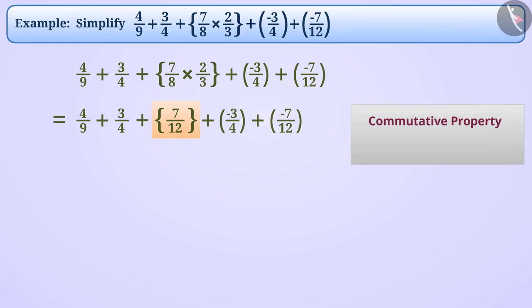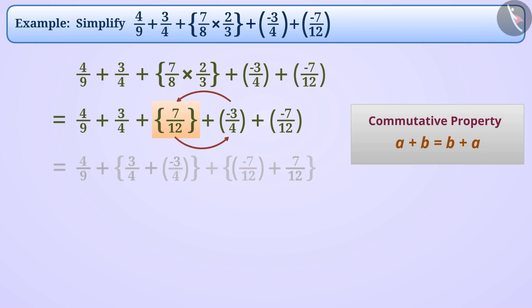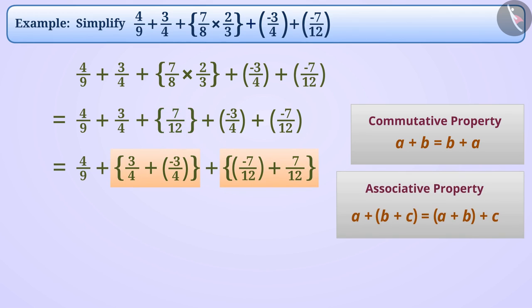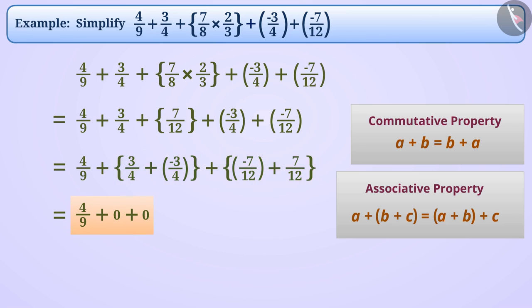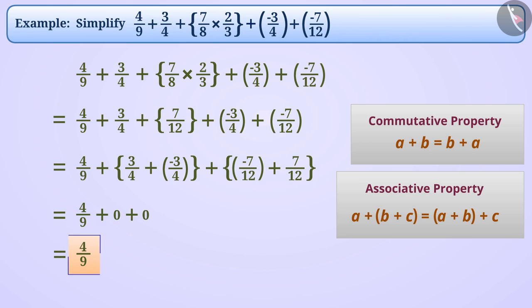Now, with the help of commutative property of addition, we will change the order of numbers and form their groups with the help of associative property. In this bracket, we see that 3 by 4 and minus 3 by 4 are additive inverse of each other, therefore their addition is 0. Similarly, the addition of the brackets is also 0. Since 0 is the additive identity, if 0 is added to 4 by 9, then the answer is 4 by 9 only. Therefore, the answer is 4 by 9.